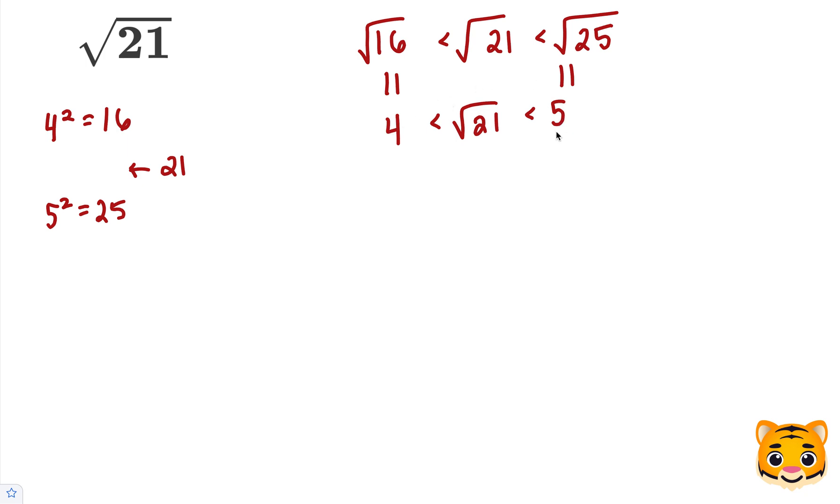Now we want to find a tenths place decimal that, when multiplied by itself, gives us about 21. So let's try out values such as 4.5 squared, or 4.5 times 4.5.